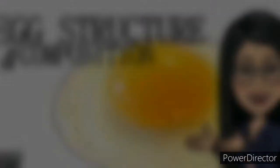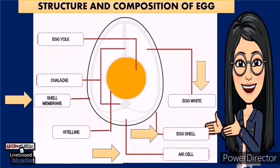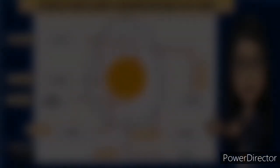Let us now identify the egg structure and composition. We have: egg shell, air cell, shell membrane, egg white, chalaza, vitelline membrane, and egg yolk.